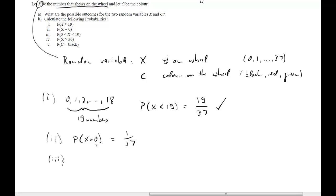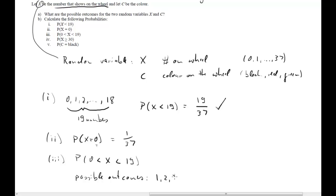Third, the probability that the outcome is larger than 0 and smaller than 19. The possible numbers here are almost the same as before, but not including 0 — so the outcomes are 1, 2, all the way up to 18. These are 18 numbers out of 37 possibilities, so the probability is 18 over 37.